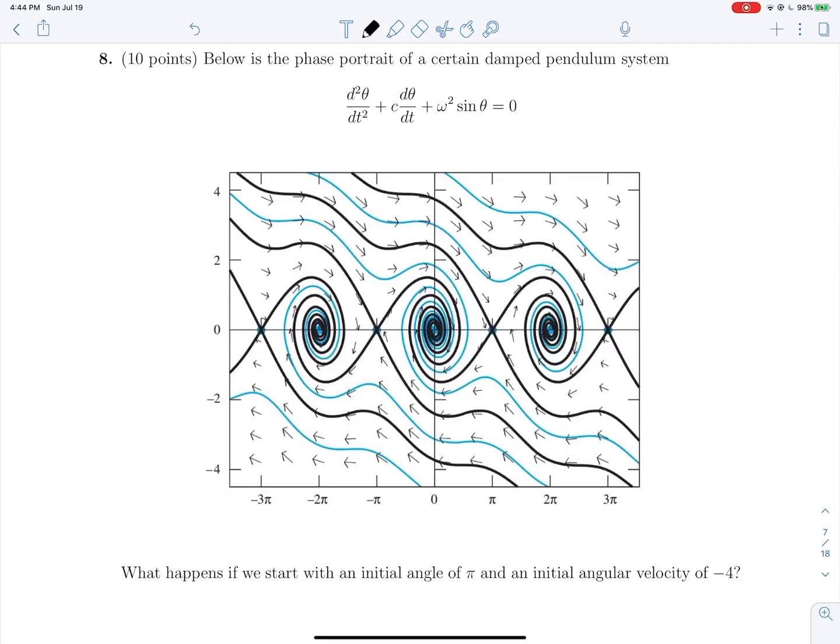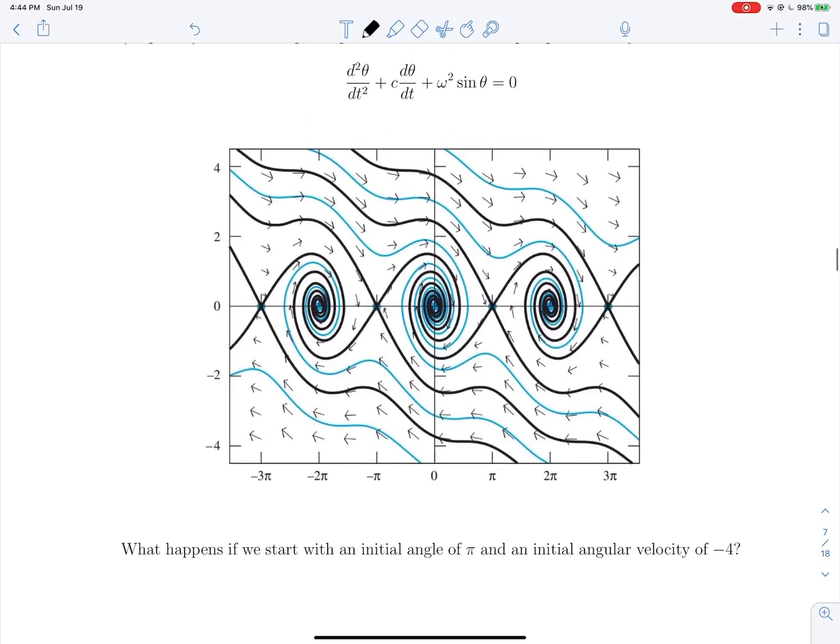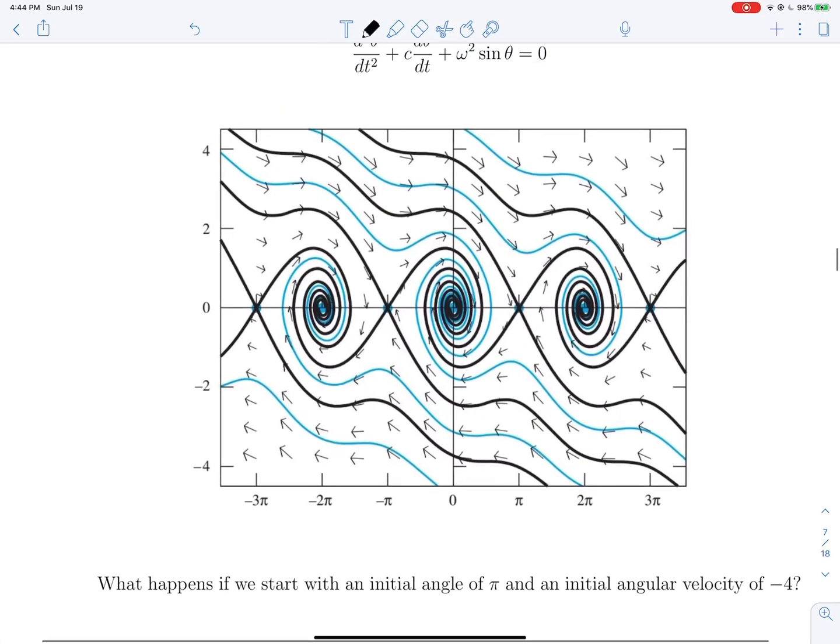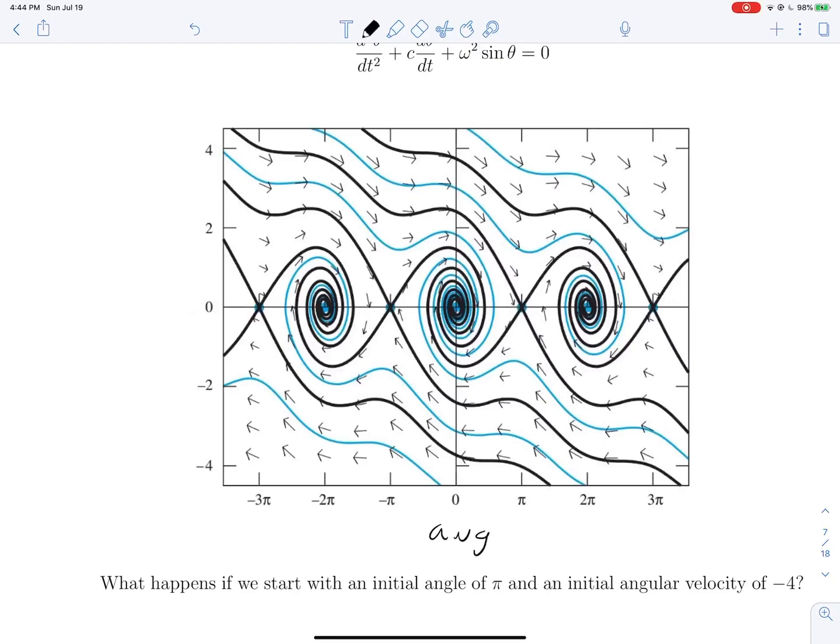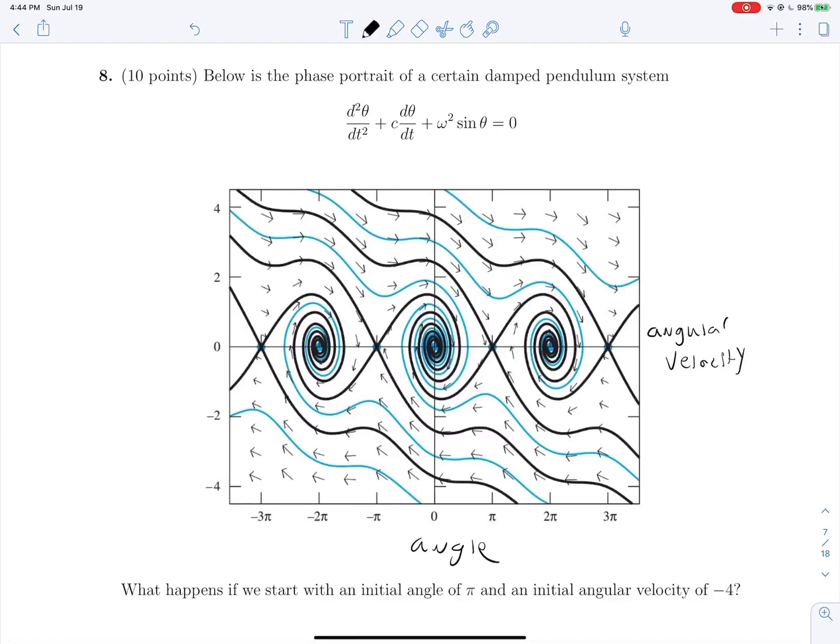Below is the phase portrait of a certain damped pendulum system. What happens if we start with an initial angle of π and an initial angular velocity of negative 4? We can see here that our x-axis is angle, which means that our y-axis is angular velocity. Let's just step back for a second and think about what the behavior of a damped pendulum system should be. If we have a pendulum that won't keep swinging forever, that there's some kind of damping coefficient that slows it after a certain amount of time or swings, we can kind of think about what that behavior would look like. Maybe it starts off with enough angular velocity to do a couple of rotations and then probably ends up swinging back down to equilibrium at the bottom.